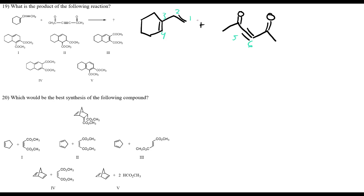The Diels-Alder mechanism works like this: one diene double bond attacks the dienophile, the other diene double bond re-forms between C2-C3, and two new sigma bonds form (C1-C6 and C4-C5). The dienophile's substituents (ketones on C5 and C6) stay attached. This forms two new bonds and is energetically favorable.